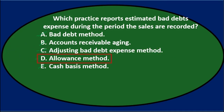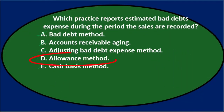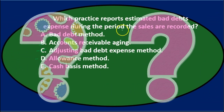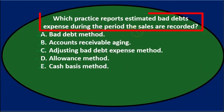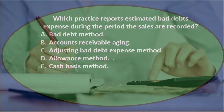D, the allowance method, sounds familiar and is the correct answer. The allowance method is the preferred method, and the answer is often going to be the allowance method when the question asks what method we should be using. This is because it applies the matching principle — we record the bad debt expense at the same time the sale was made, matching the bad debt expense to the same period the related sales are recorded.